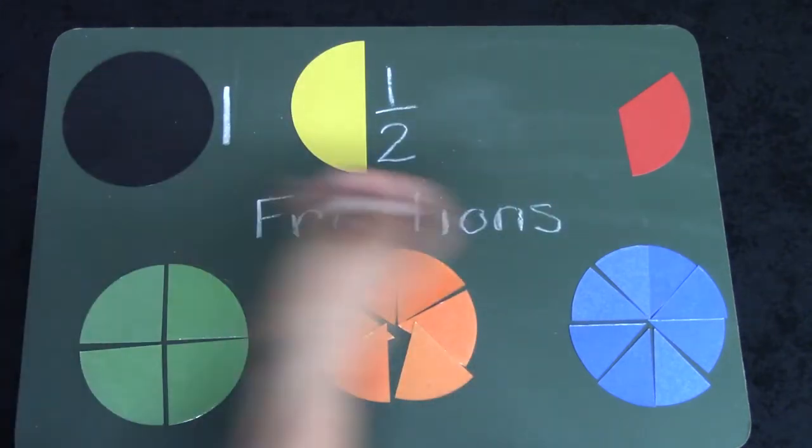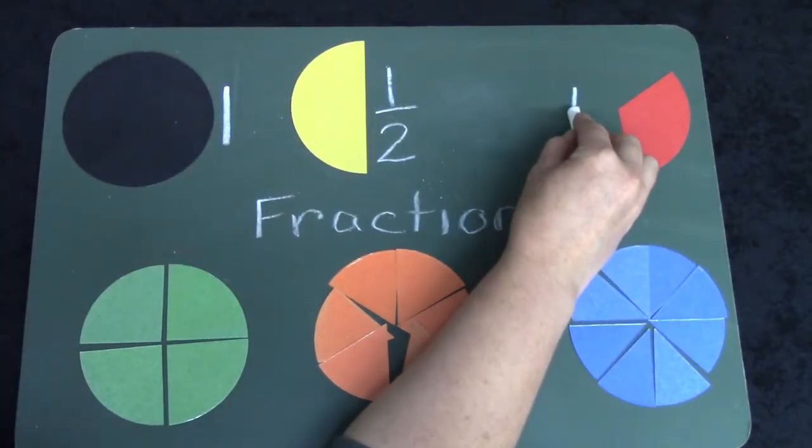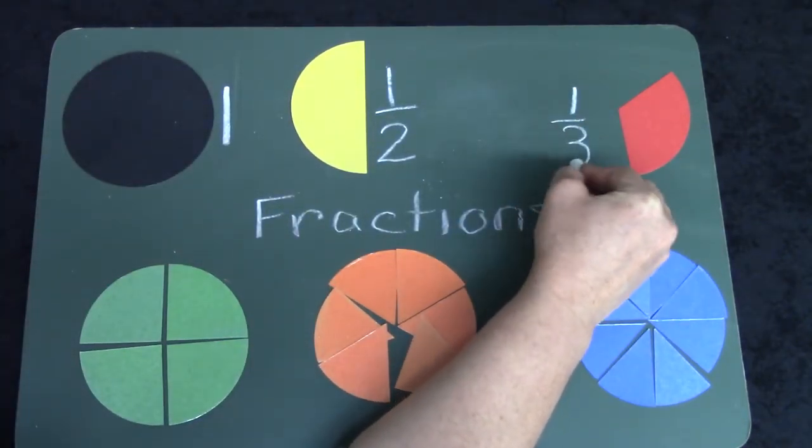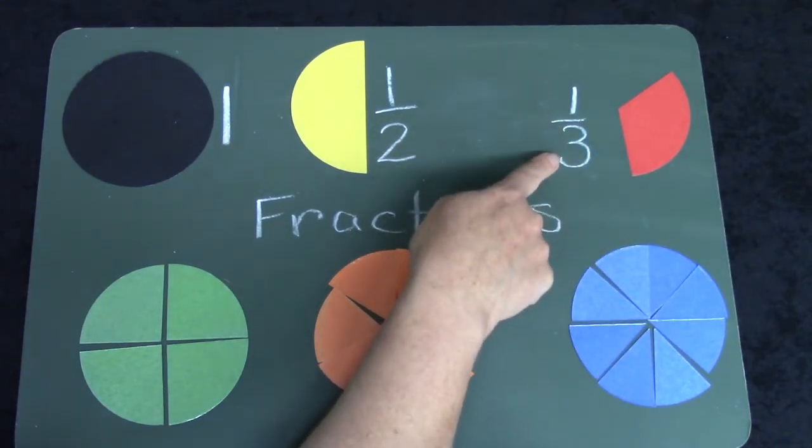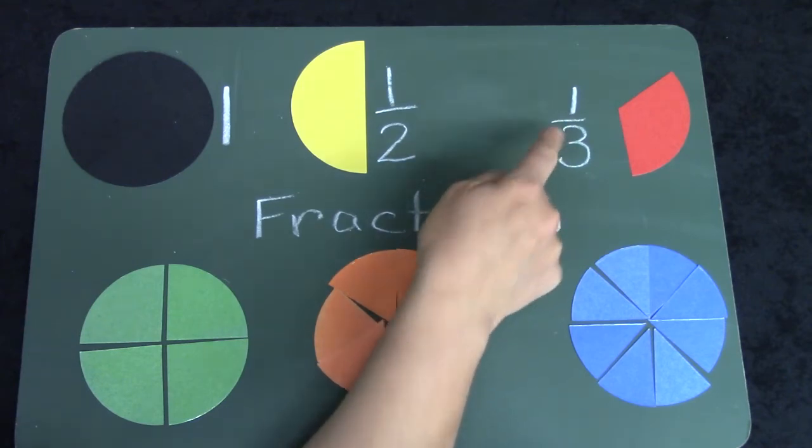If I only had one out of the three pieces, I would write it this way. I have one out of the three pieces. One third.